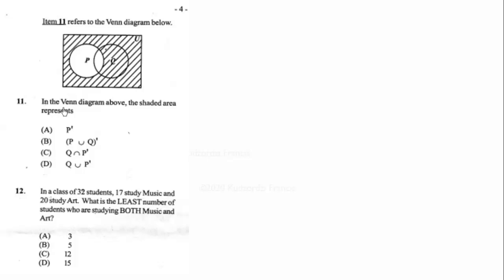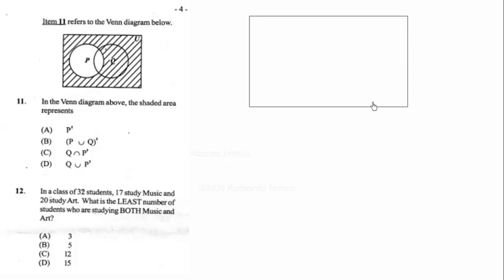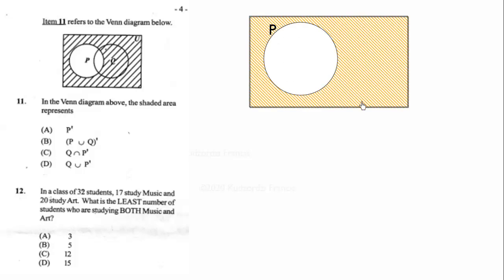We want to continue with our solution from number 11. In the Venn diagram above, the shaded area represents — our Venn diagram is our universal set and we have the set P. The complement of P is P prime, which is the region that is shaded. So this shaded region is equal to P prime.